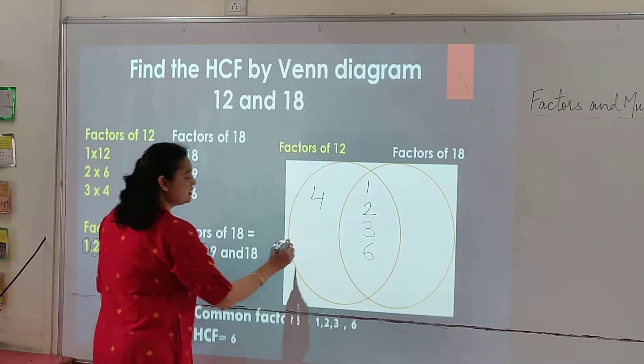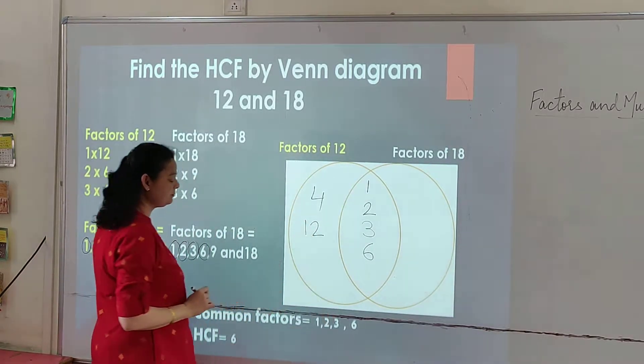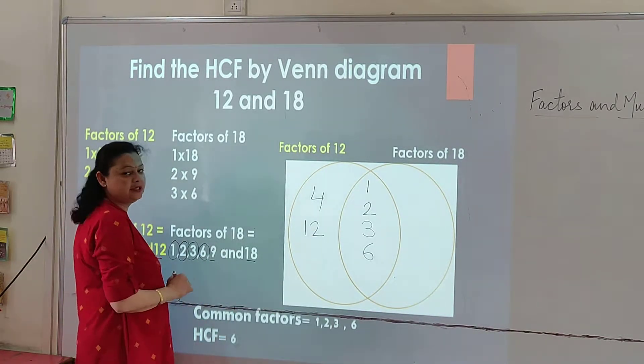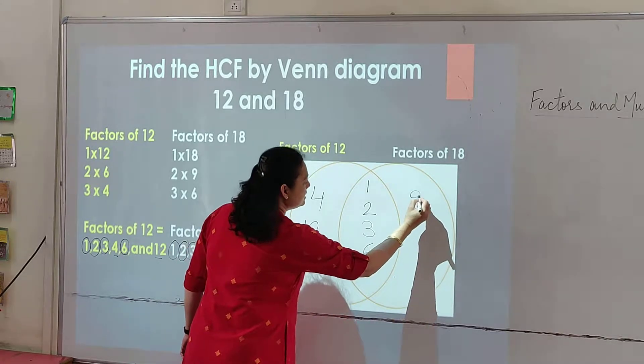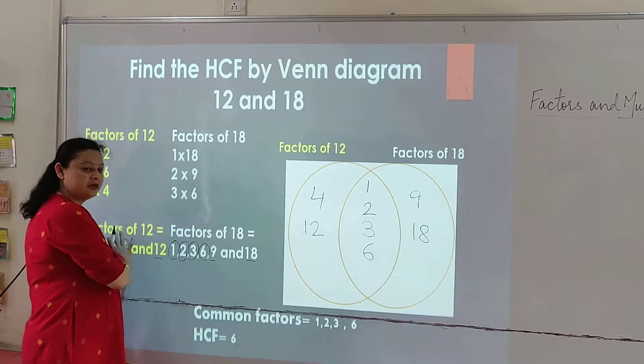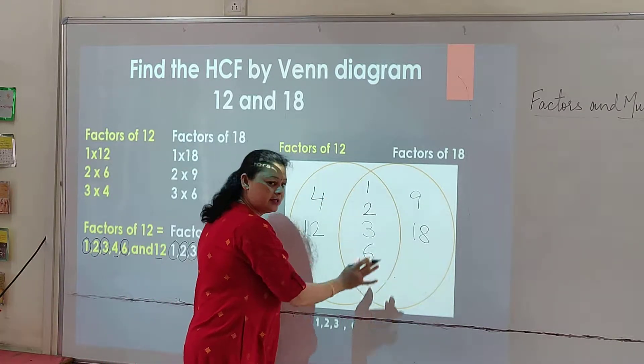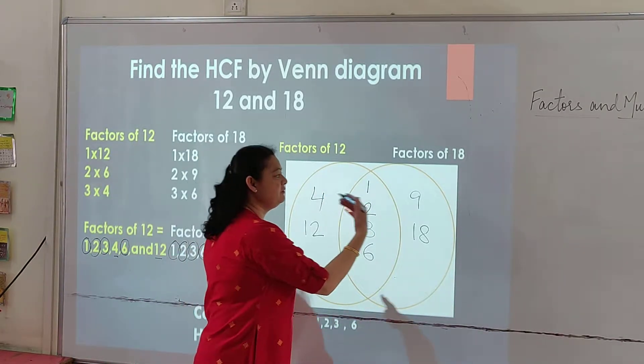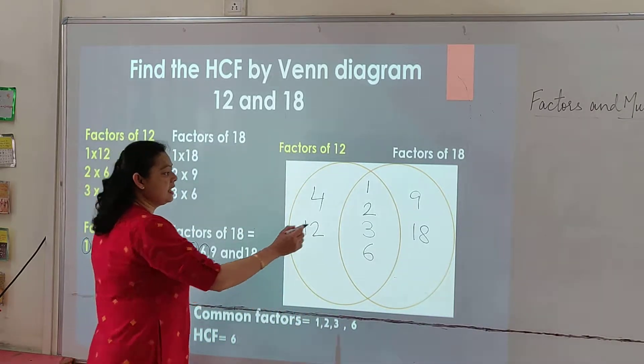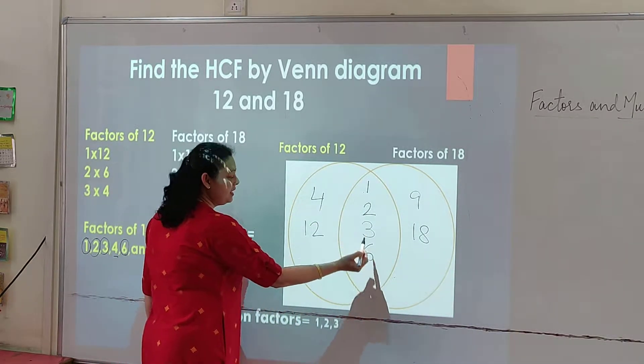Then 6 is again a common factor, so we will write it in the centre. 12 is not a common factor, it will be written in this column. Now for 18, 9 and 18 will be written in the column section of 18. So common factors are 1, 2, 3, and 6.